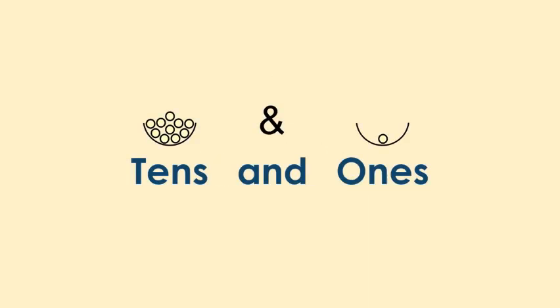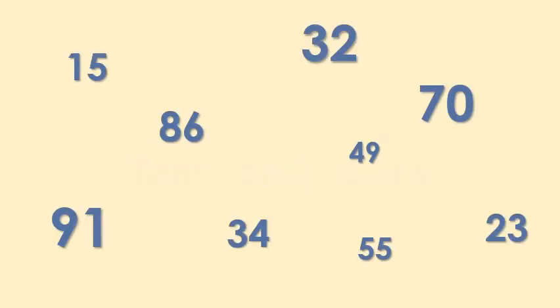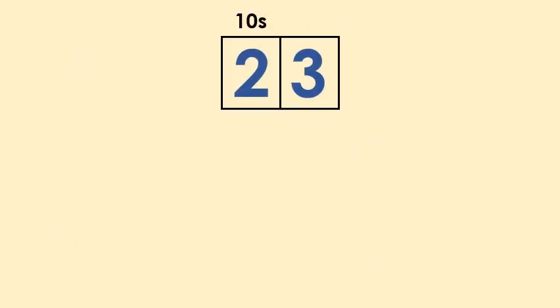These numbers are all two-digit numbers. You might recognise some of them. Once numbers reach two digits, they might seem quite large and confusing. But it helps if we imagine what the numbers actually look like. In a two-digit number, the first digit tells us how many tens there are, and the second digit tells us how many ones there are.